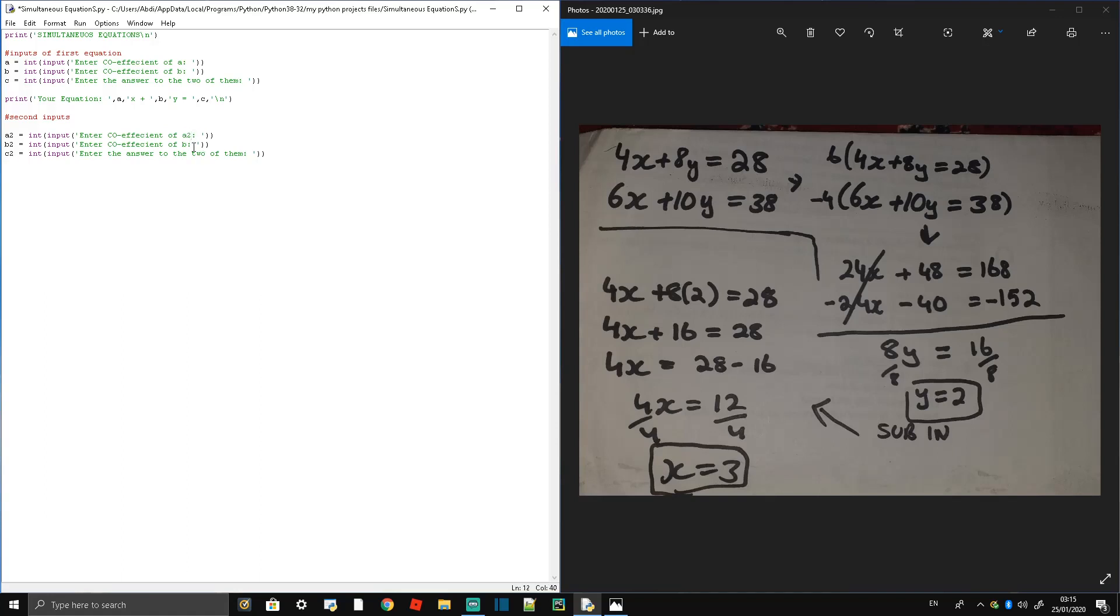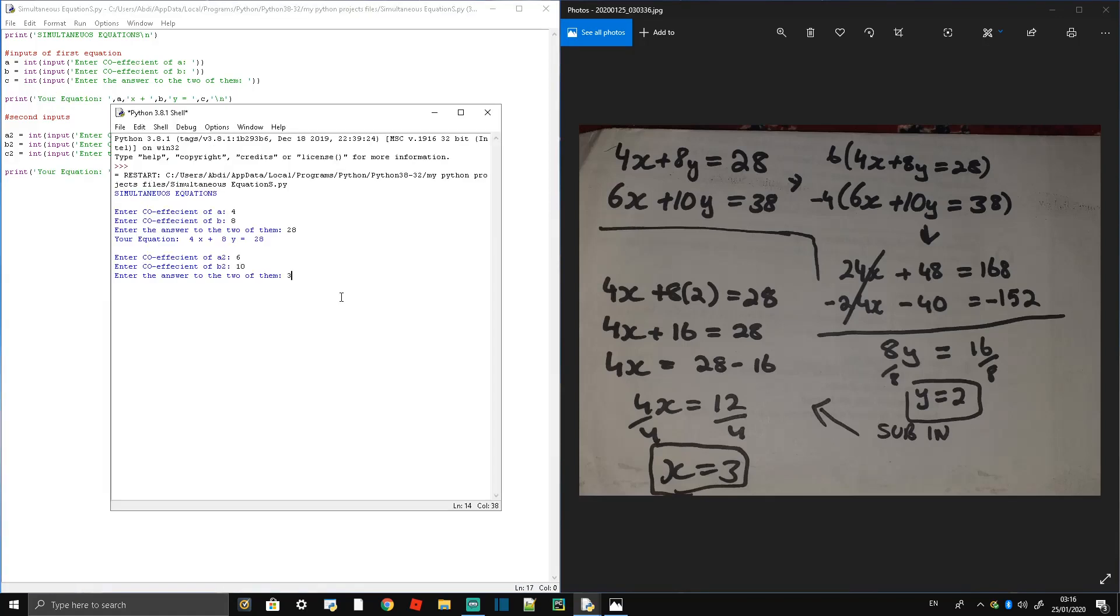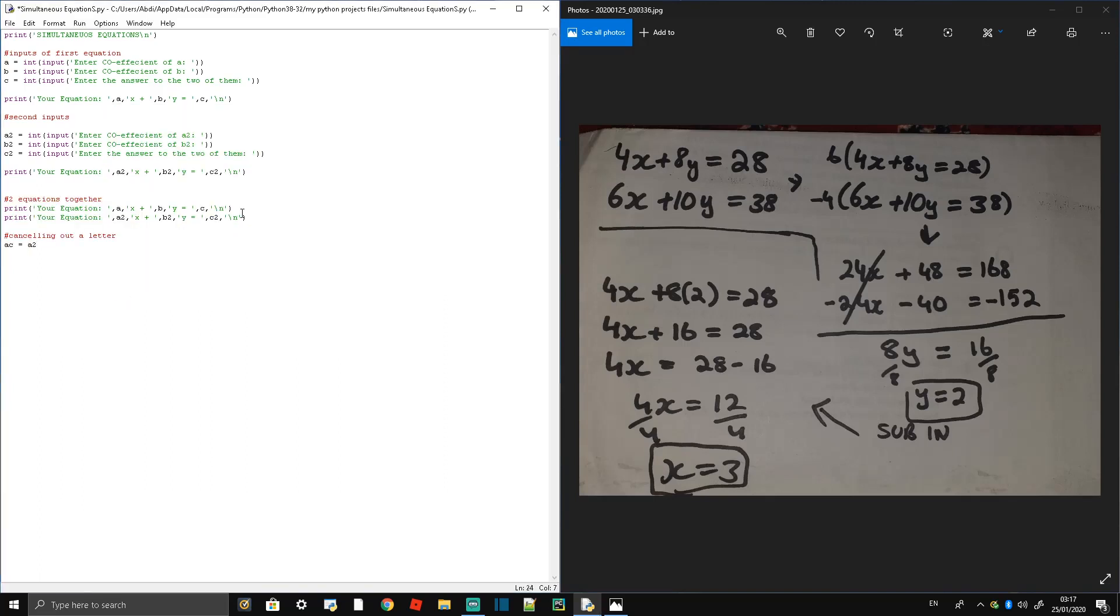And then when we enter the coefficient of a, which is 4, the coefficient of b, which is 8, and then the last result, which is 28, it should form the equation for us. Starting the sum, the first thing we need to do is cancel one letter so we only have one letter to deal with.